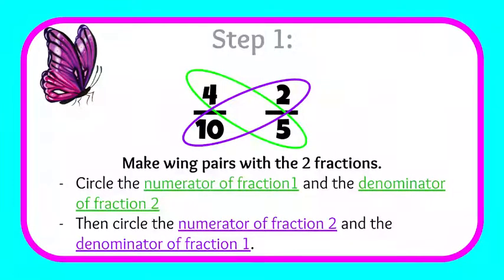Step one, you're going to make wing pairs with the two fractions. That means you're going to circle the numerator of fraction one and the denominator of fraction two, then the numerator of fraction two and the denominator of fraction one.